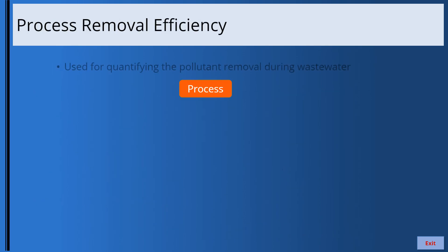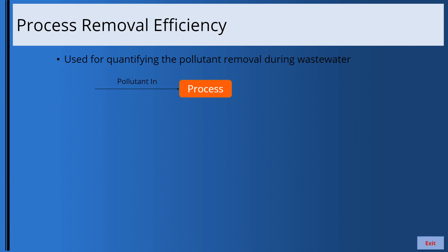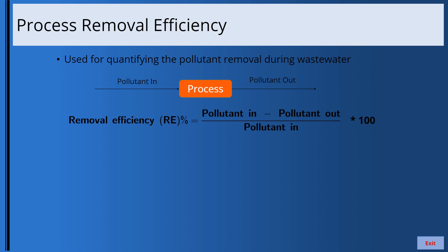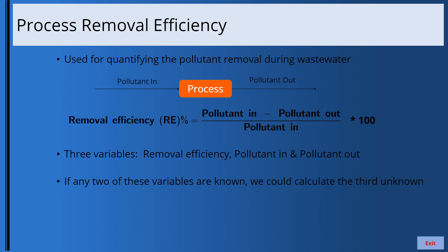In a certain process, you may have a quantity of pollutant coming in and a quantity coming out. The removal efficiency of this process is calculated as the concentration or mass of pollutant in, minus pollutant out, divided by the pollutant in. There are three variables: removal efficiency, pollutant in, and pollutant out. If any two are known, the third can be calculated. Pollutant in and out can be expressed in concentration units or mass units such as pounds or pounds per day.